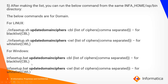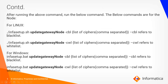After making the list, you have to run the update domain ciphers command. It will update the domain with the ciphers we want to update, using -cbl or -cwl. CBL refers to ciphers blacklist and CWL refers to ciphers whitelist. The same infasetup.bat will be used for Windows. After running the update domain ciphers command, we need to run the same set of ciphers on the node as well — using infasetup.sh updategatewaynode -cbl or -cwl, and infasetup.bat for Windows.